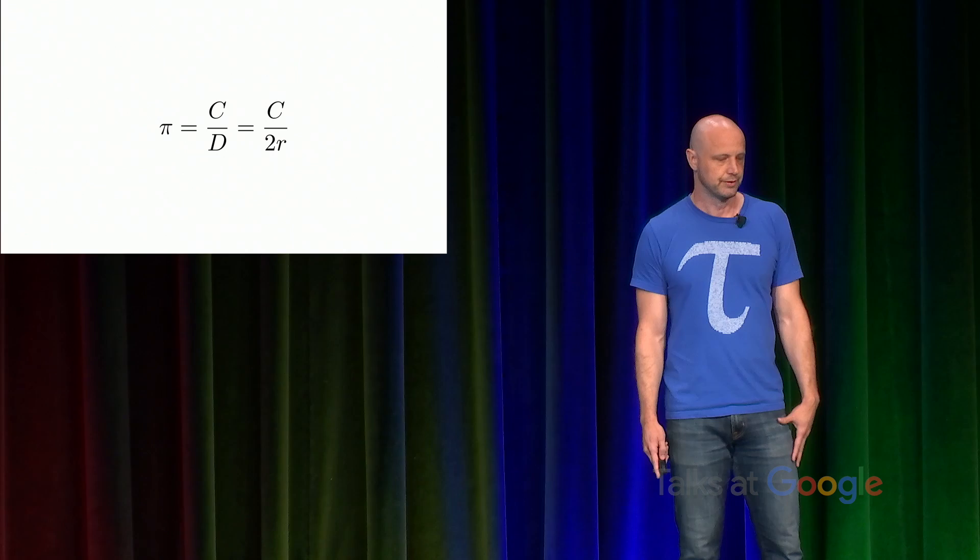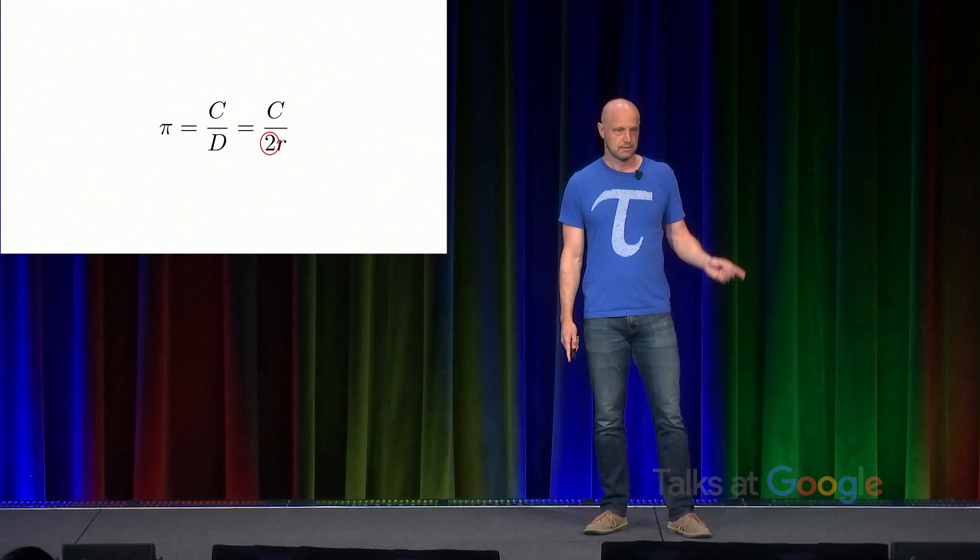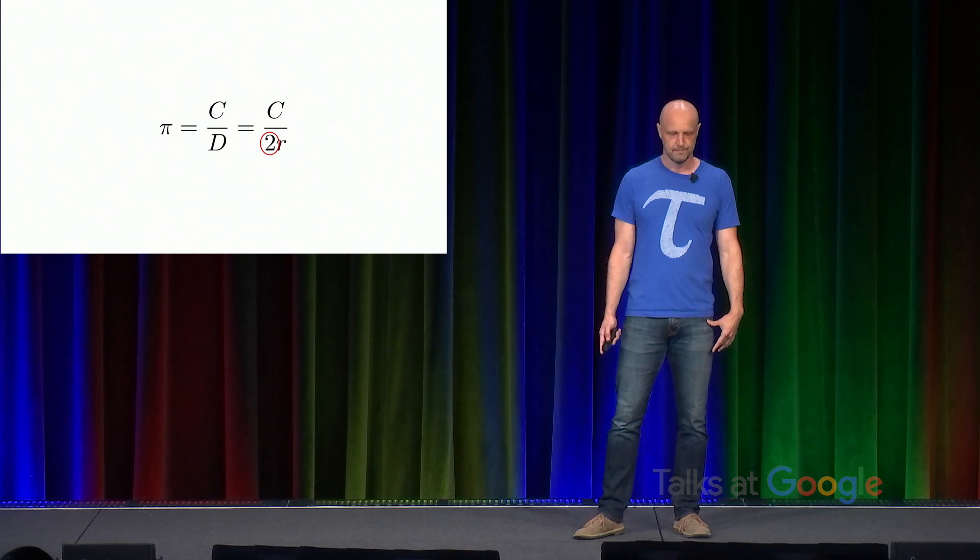A quick calculation shows the relationship between the two. Pi is equal to C over D, which is equal to C over 2R. And this factor of 2, as we'll see, haunts us throughout science, engineering, and mathematics. Multiply through by that 2, and you get that C over R is equal to 2 pi.